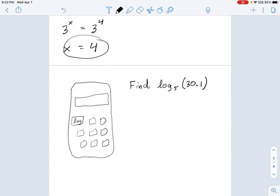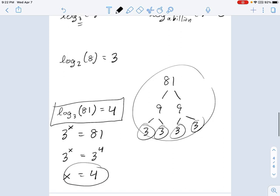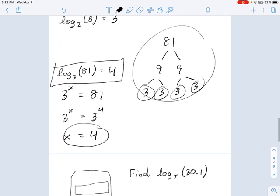So in this next example, we're going to start using calculators to find logarithms. In the previous examples, we could just do it by hand because it was something simple like 3 to the 4 equals 81.